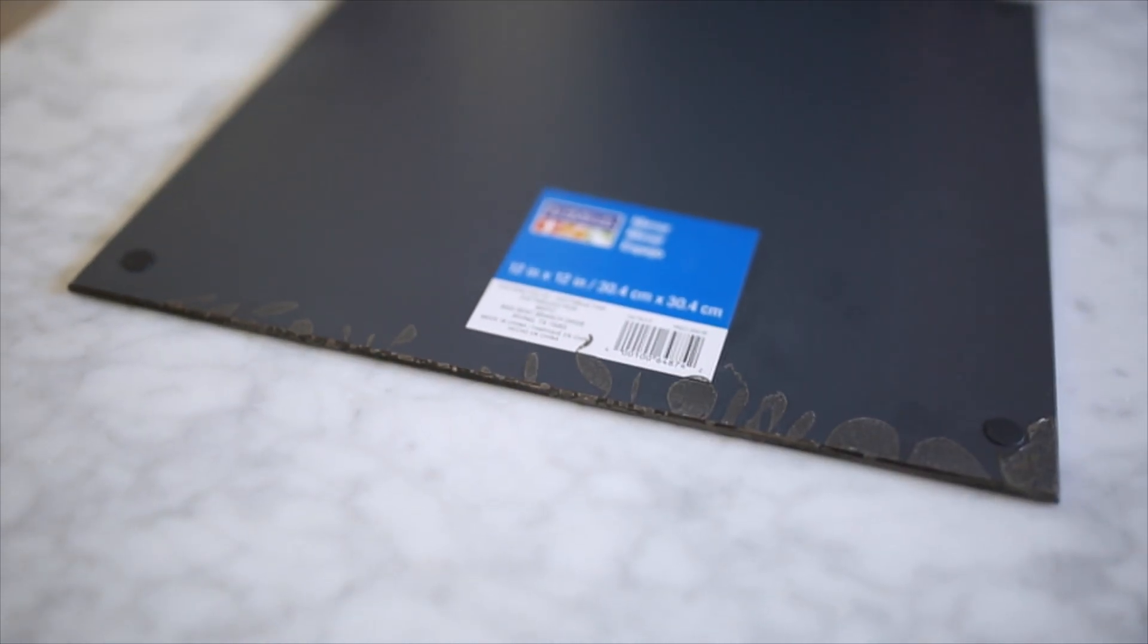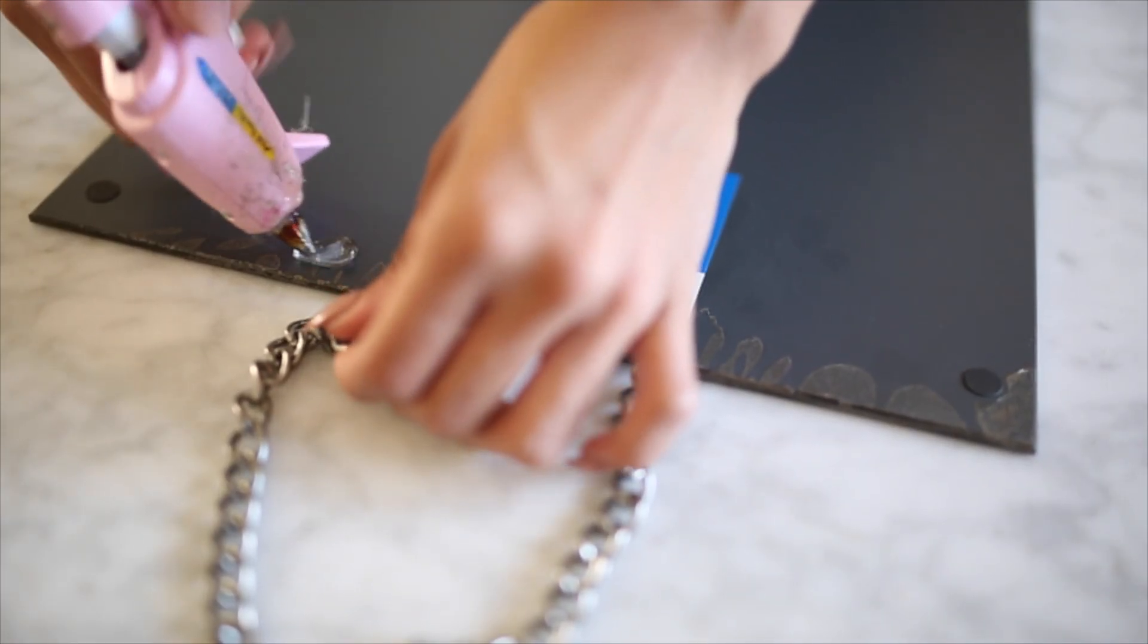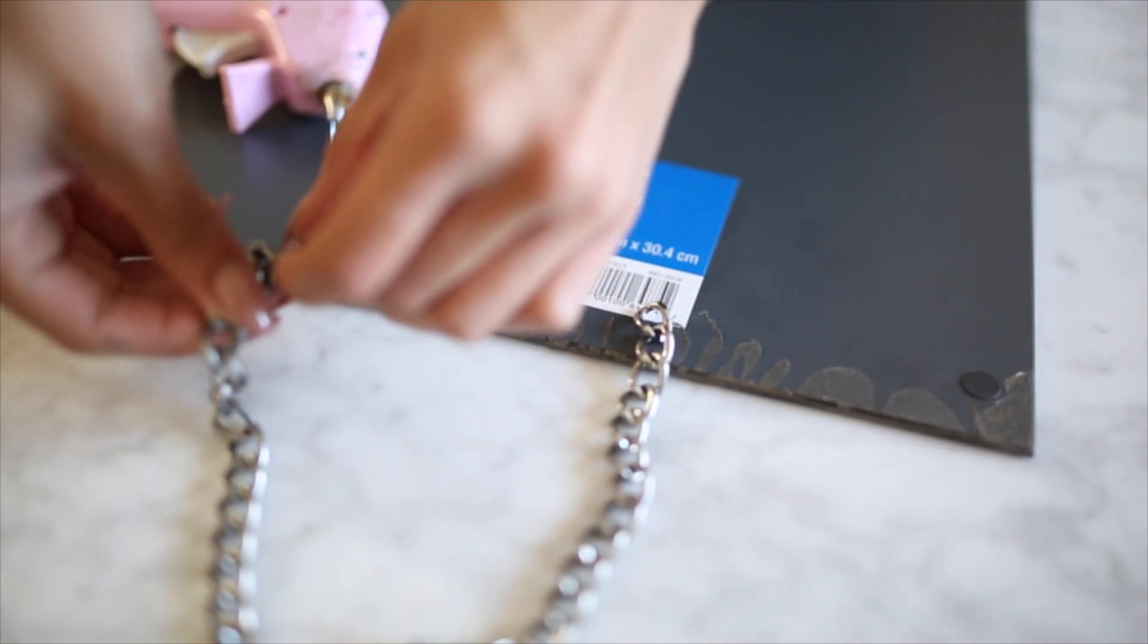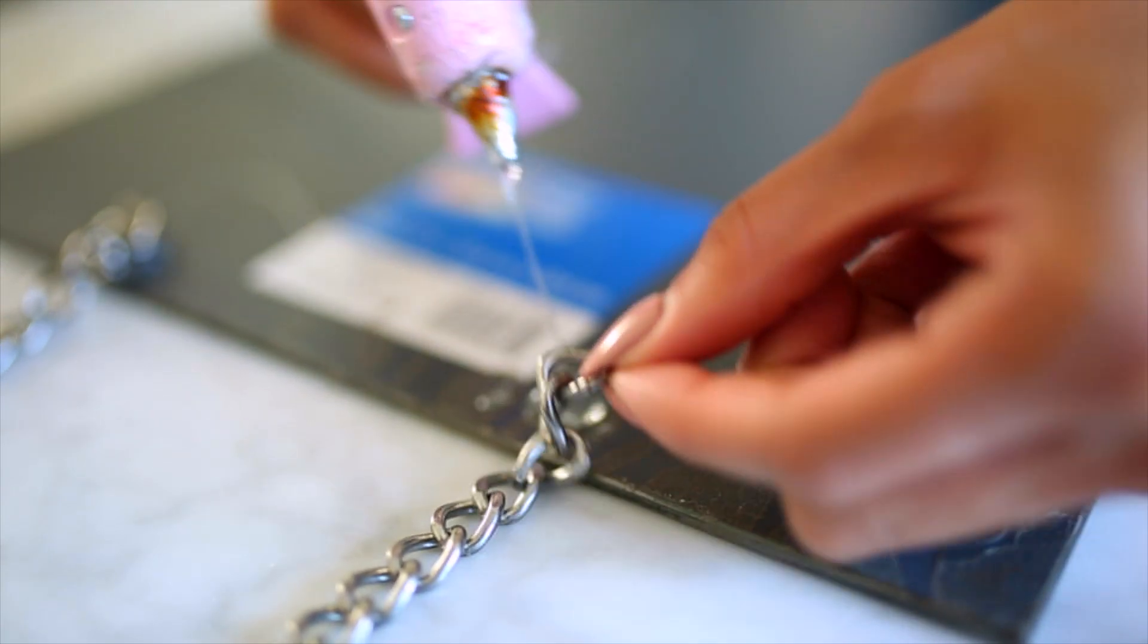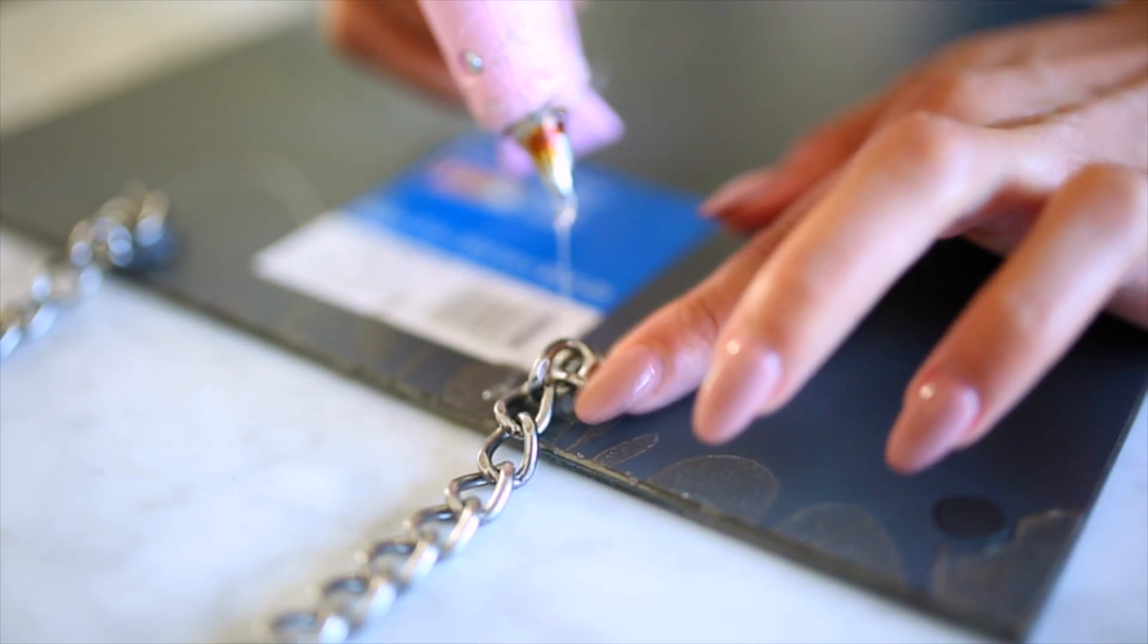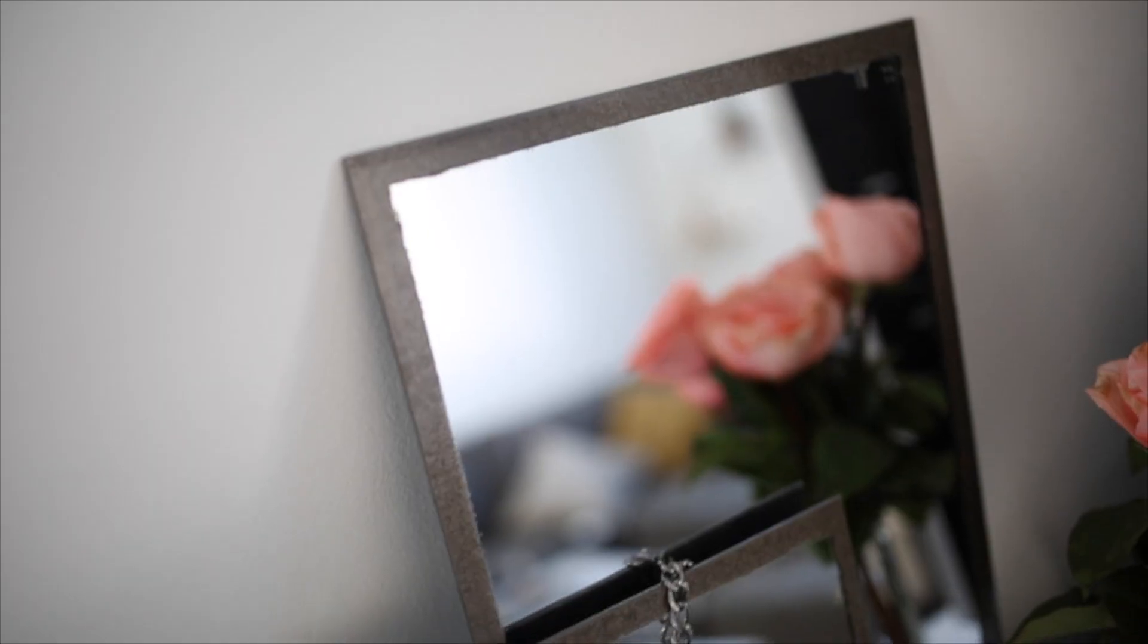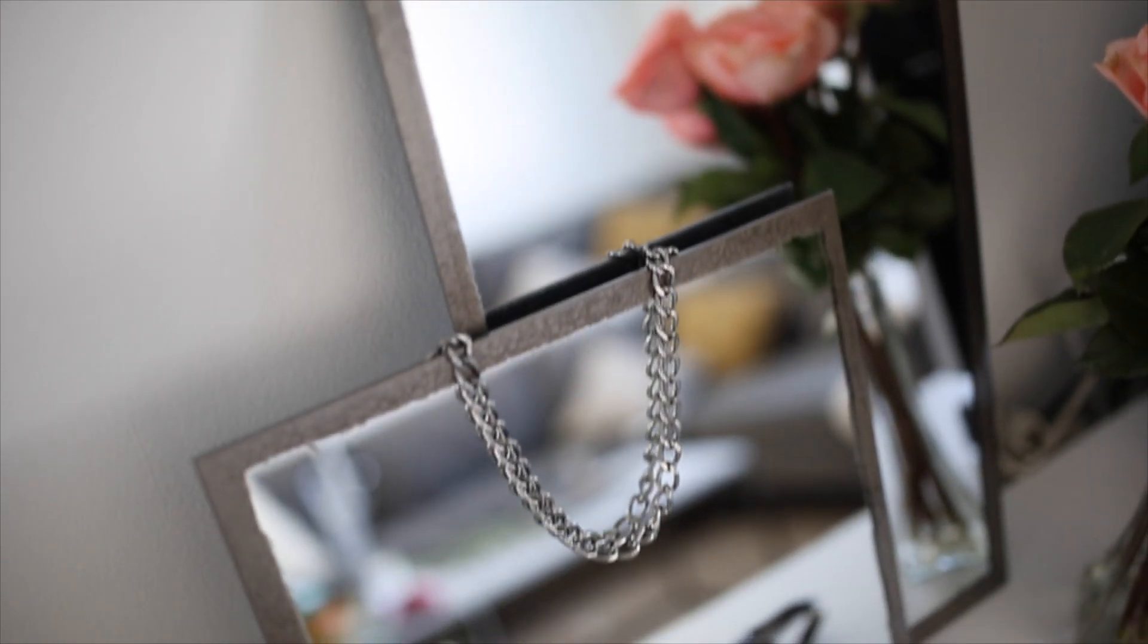And then once that's done, I just flipped one of them over to the back and I secured the chain with some hot glue. Keep in mind, you cannot hang this on the wall. If you wanted to, you could secure it with some hooks and E6000. But I just kind of wanted to layer them on the wall as you will see here. The hot glue dries instantly and look at how amazing these mirrors turned out. I absolutely love them.